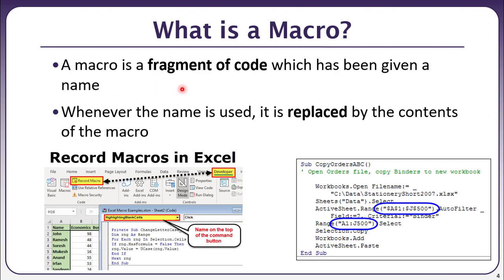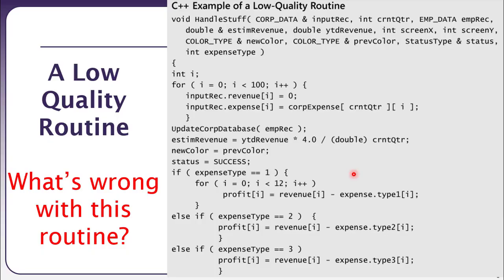A macro is a fragment of code which has been given a name. We might already have seen this in Microsoft Excel, where we can record a sequence of steps and replay them for similar actions. At the back end, those steps are replaced by the contents of the macro whenever it is played. So macros, procedures, methods, and routines are conceptually similar — they are synonyms.